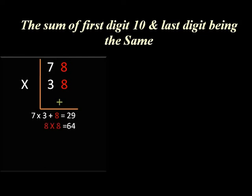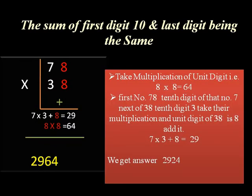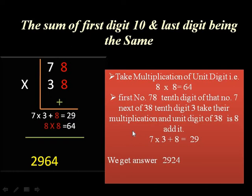So the answer is 2964. To repeat the steps: first, multiply the unit digits — 8×8 = 64. Then take the tens digit of 78, which is 7, and the tens digit of 38, which is 3, multiply them and add the unit digit 8: 7×3 + 8 = 29. So the answer is 2964.